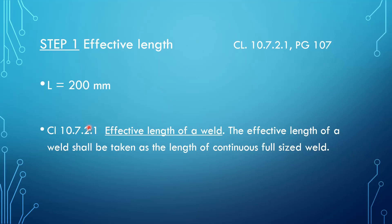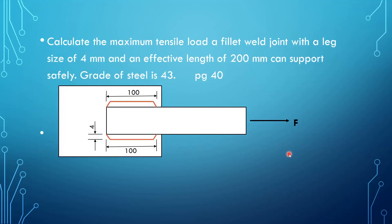Step number one: we want to determine the effective length. We are directed to clause 10.7.2.1, found on page 107 in your book. The clause states the effective length of the weld shall be taken as the length of continuous full-sized weld. Going back to our diagram, the weld size is 100 on one side and 100 on the other, so the effective length is 100 plus 100, which gives us 200 millimeters.